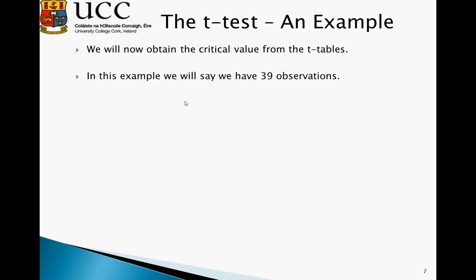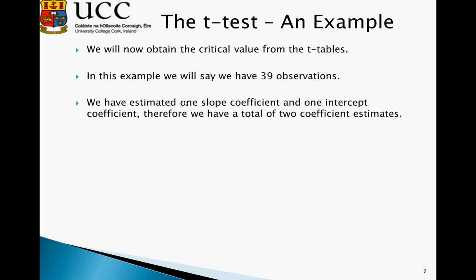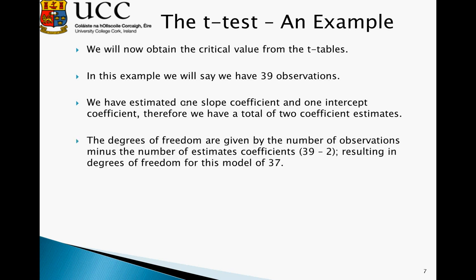We now need to obtain the critical values from the t-table, and in this example, we will say that we have 39 observations. We have estimated one slope coefficient and one intercept coefficient, so we have a total of two coefficient estimations. Therefore, degrees of freedom given in this model is 39 minus 2, resulting in a degrees of freedom of 37.